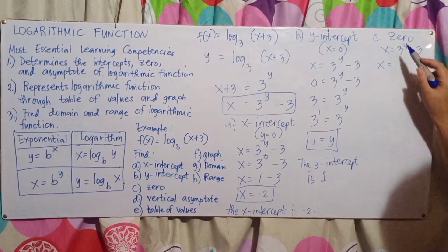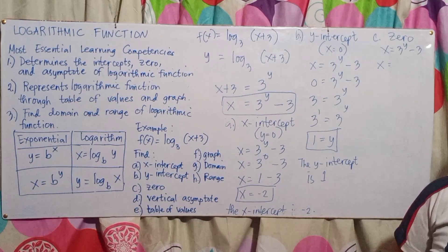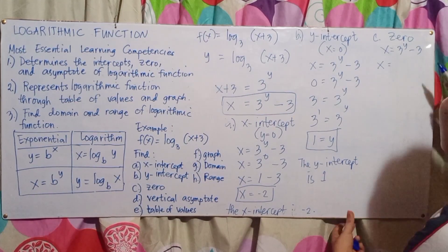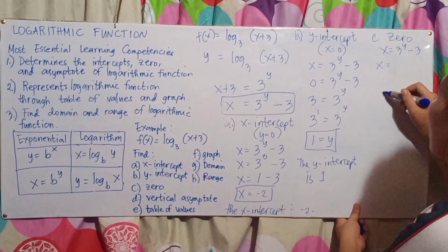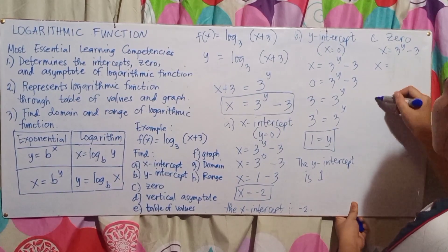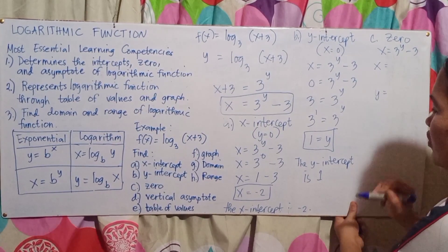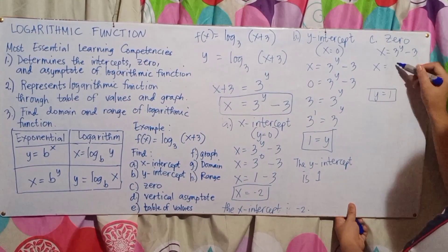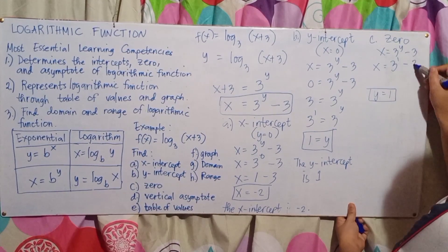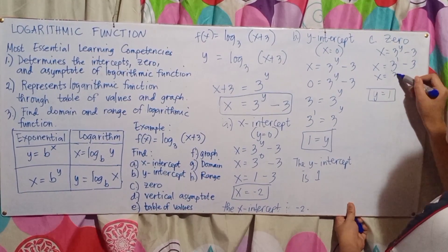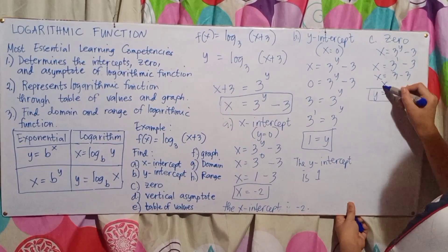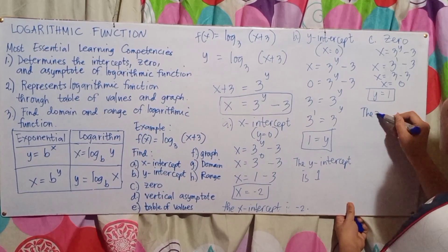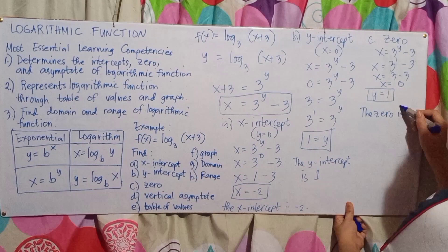To solve for the y-intercept, think of any value of y that will make x equal to 0. Let x equal 0 in the exponential form: 0 equals 3 raised to the power of y minus 3. Substituting y equals 1: 3 raised to the power of 1 minus 3 equals 3 minus 3 equals 0. Therefore, the y-intercept is 1.